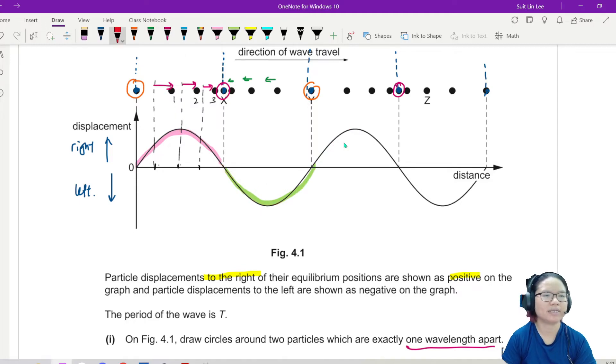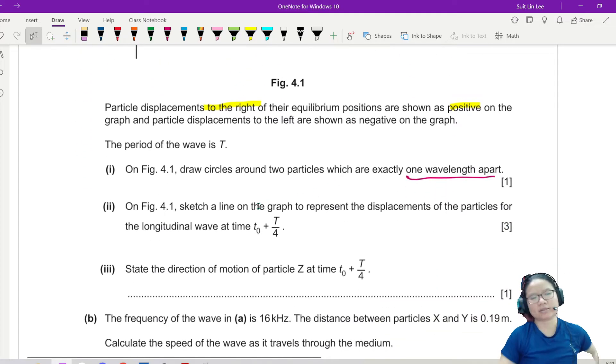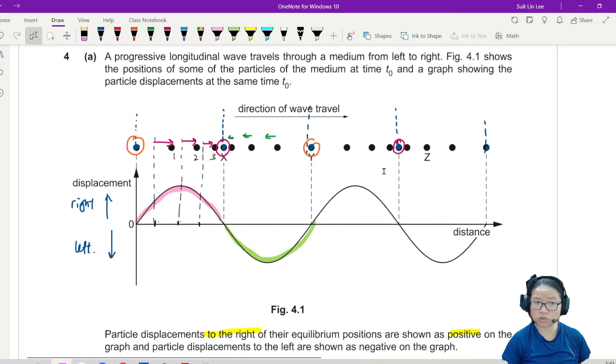Let me delete this. Any one. It can be the orange circles, it can be the purple circles. Next. Sketch a line on the graph to represent the displacement of the particles for t-naught plus quarter cycle. This is not a stationary wave. This is not a stationary wave. This is a progressive wave. Progressive wave means the wave will move, and it is moving from left to right.